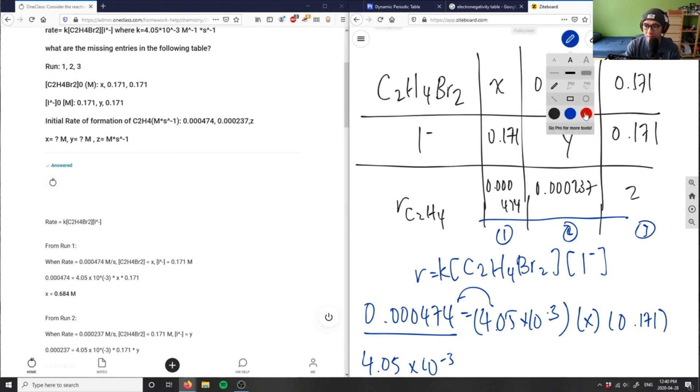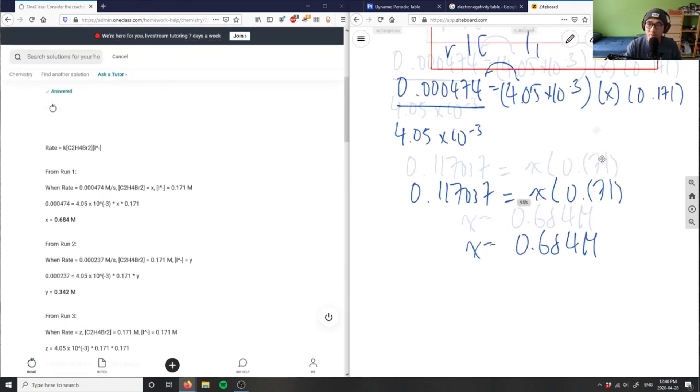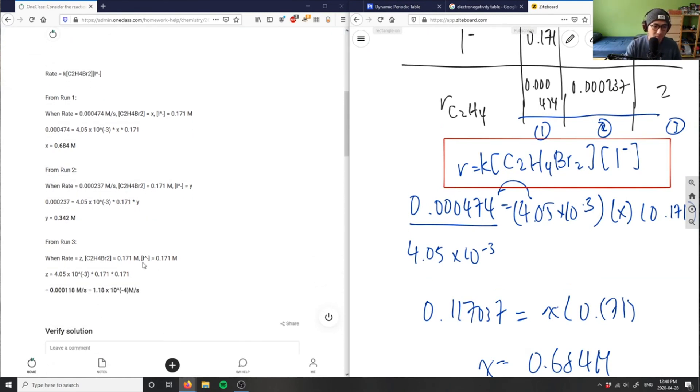Basically using this rate law, we're plugging in the things we know and algebraically isolating for the things we don't know. Let me just check their work to see if they algebraically did it right. 0.000237 would be this rate here. That's good. Times 0.171 times Y. They isolated and got 0.342. That's great.